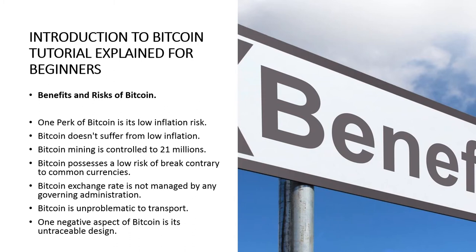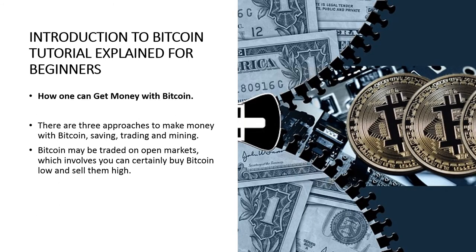Bitcoin is easy to transport. A billion dollars in Bitcoin can be stored on a memory stick and placed in one's pocket. It is easy to transport Bitcoin when compared to paper money. One negative aspect of Bitcoin is its untraceable design, as government bodies and other organizations simply cannot trace the source of your funds, which can easily attract corrupt individuals.